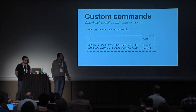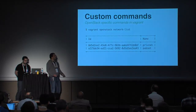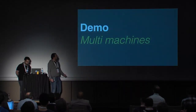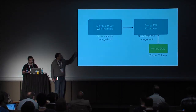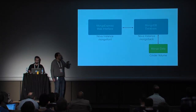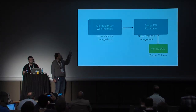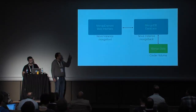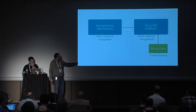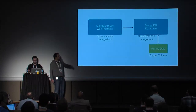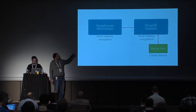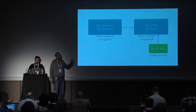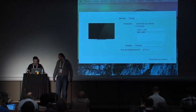Now we will do a demonstration against a real OpenStack. The demo involves two instances: a back-end instance on which we install a MongoDB database, and a front-end instance on which we install a web application that connects to MongoDB. We also have a Cinder volume attached to the MongoDB instance, and we configure the provisioning to store MongoDB data on that persistent volume.